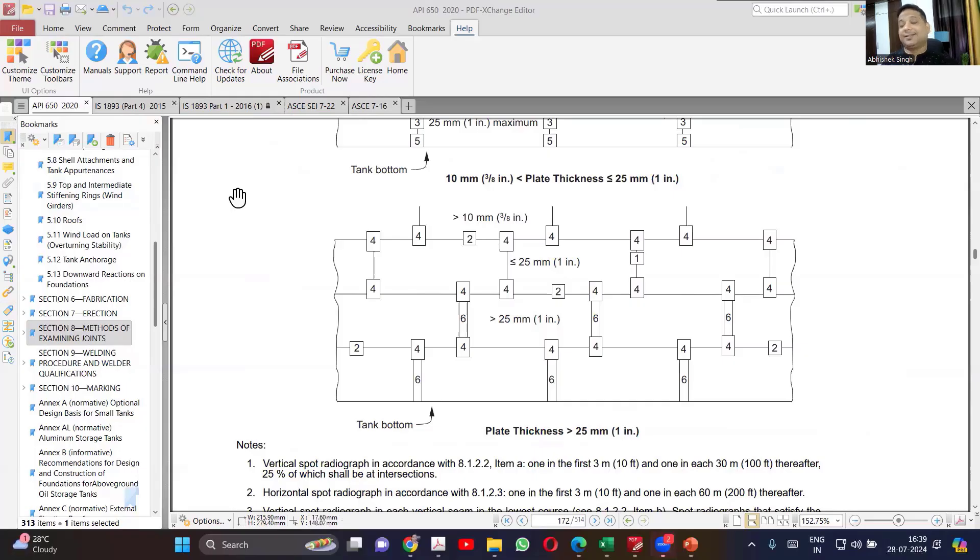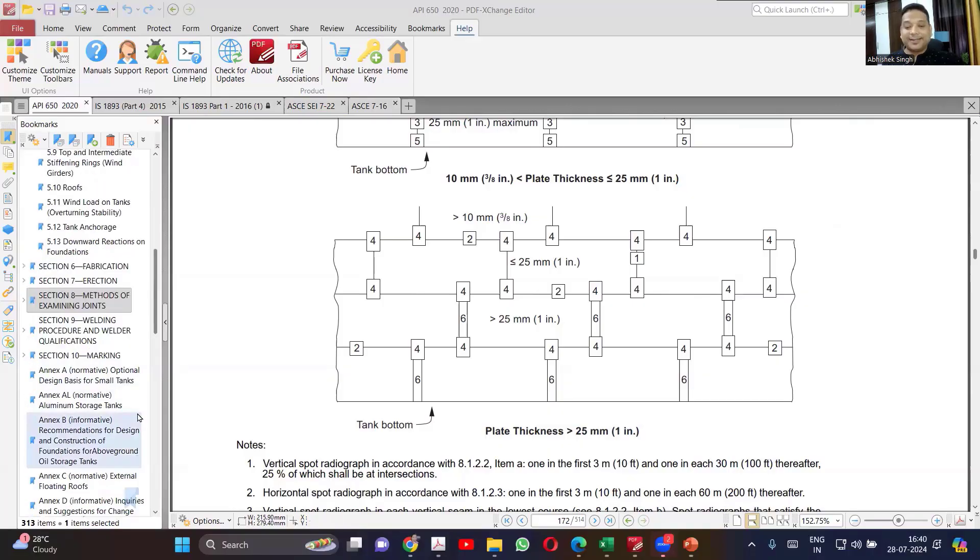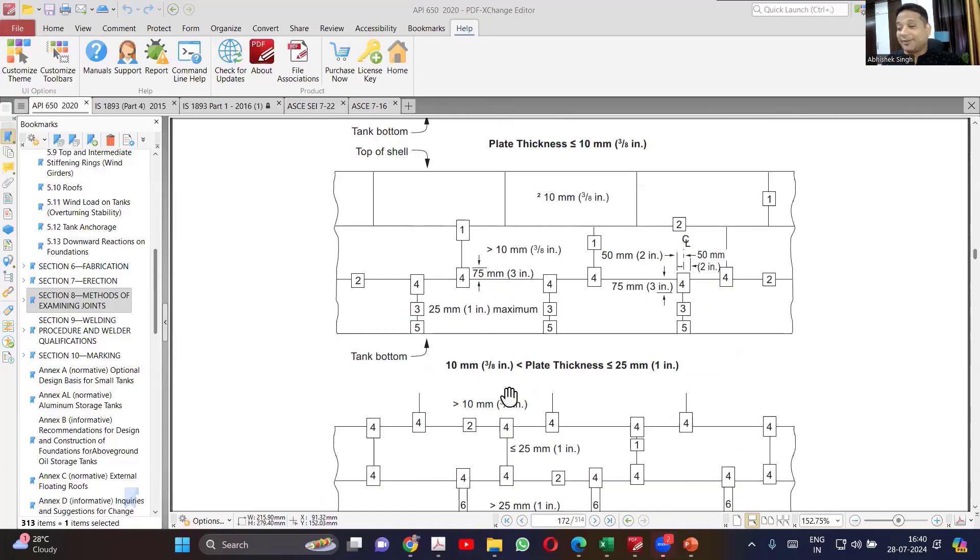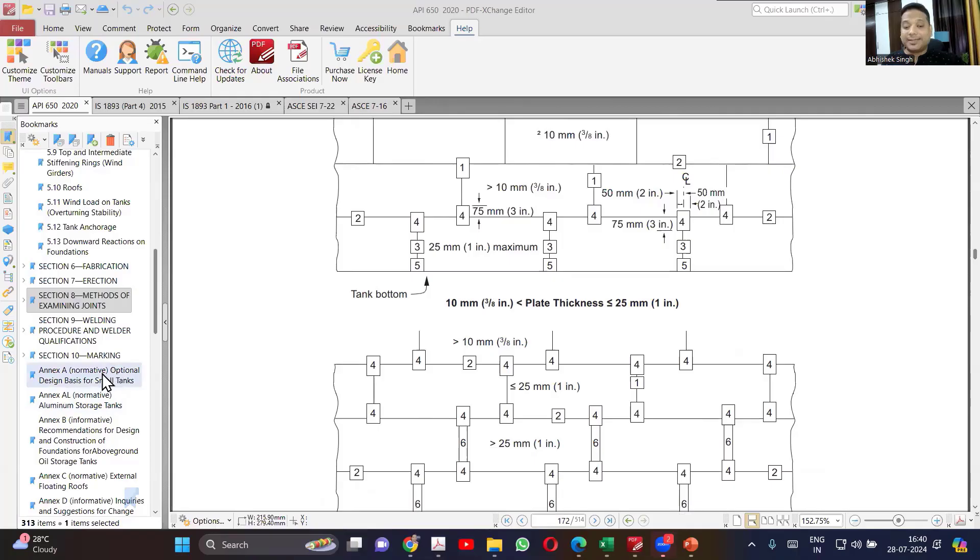So that is the reason there is no joint efficiency just coming into play for the normal design. Yes, so efficiency is not coming into play because there is a certain radiography which is already considered. So you can consider that it is considered as one, by meeting that extent of radiography. There is no relaxation in that.